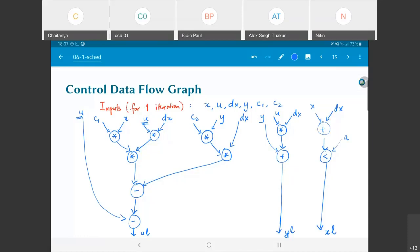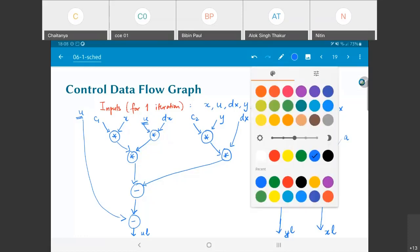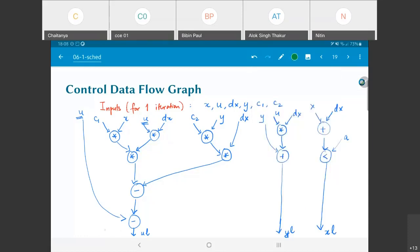So what does my actual structure now look like? What I am saying is all of this finished within one iteration. So I am drawing this green dashed line over here. And this u_l needs to now go back as the new value of u, the y_l needs to go back as the new value of y, and this x_l needs to go back as the new value of x.